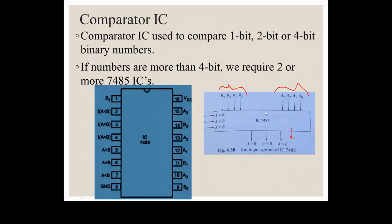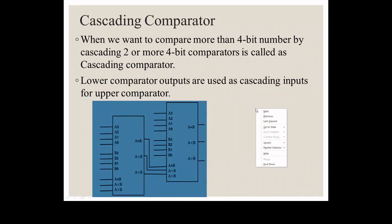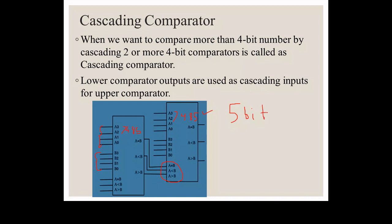Why is cascading needed? The 7485 is a 4-bit comparator IC. If we want to compare 5 bits or more, we cascade two ICs. The first 7485 IC handles the first 4 bits, and the second 7485 IC handles the remaining bits. The outputs from the first IC are fed as cascading inputs to the second IC — the A equal to B, A less than B, and A greater than B signals. This makes it effectively a 5-bit or larger comparator.